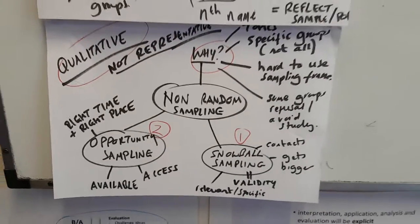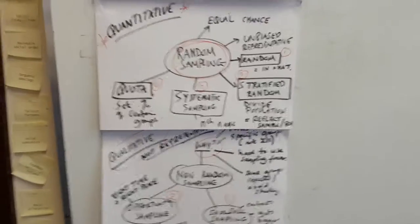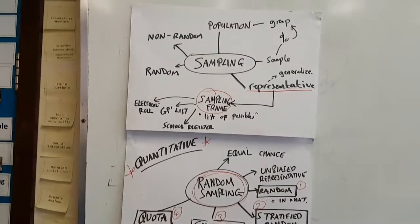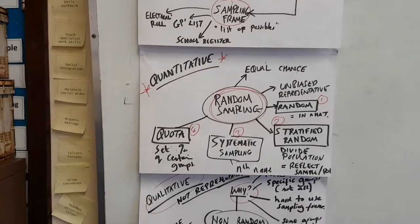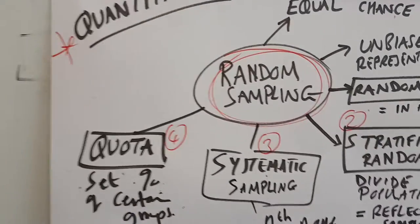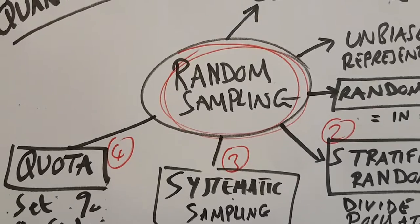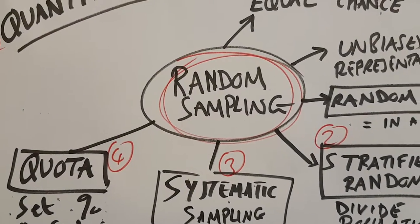So ultimately does sampling always need to be representative? No it doesn't. Depends upon topic and depends upon access and depends on the concerns. However, I'm sure the positivists would have something to say about that, and interpretivists challenge them.